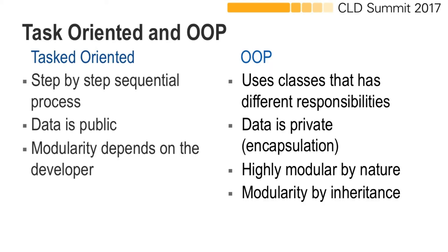Now we'll be comparing task-oriented and object-oriented programming. As we have discussed before, task-oriented is basically a step-by-step sequential process. It is going to be more problem-specific, the data is public, and the modularity will completely depend upon the developer.